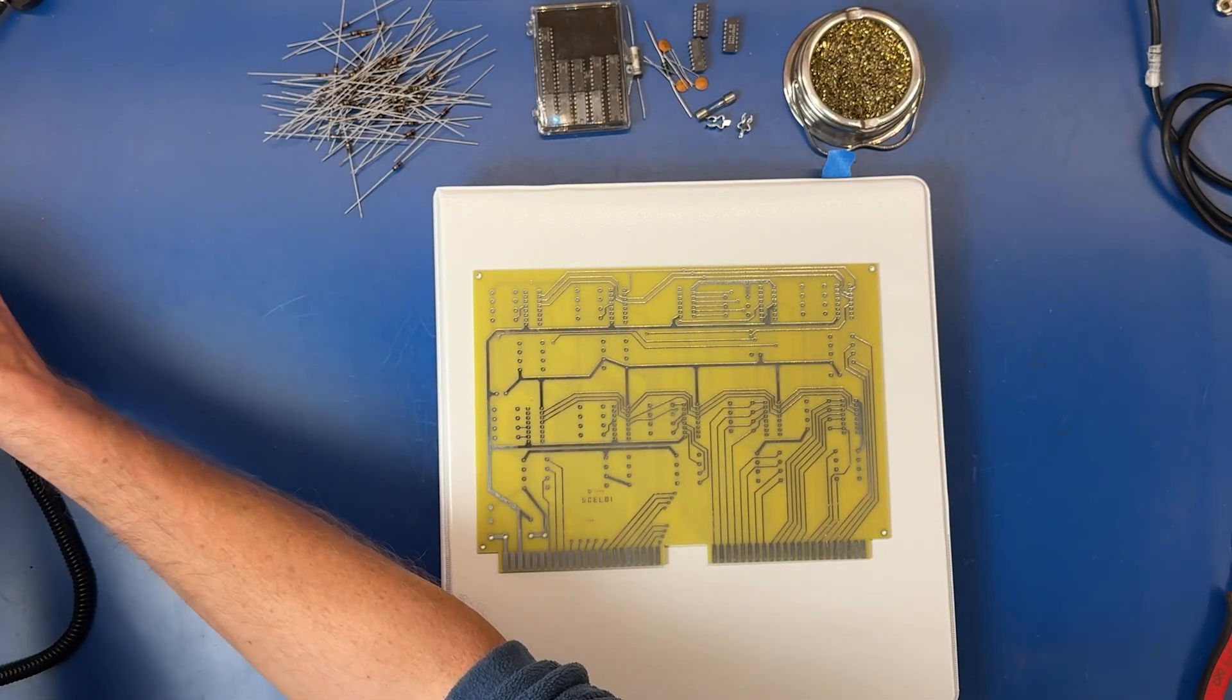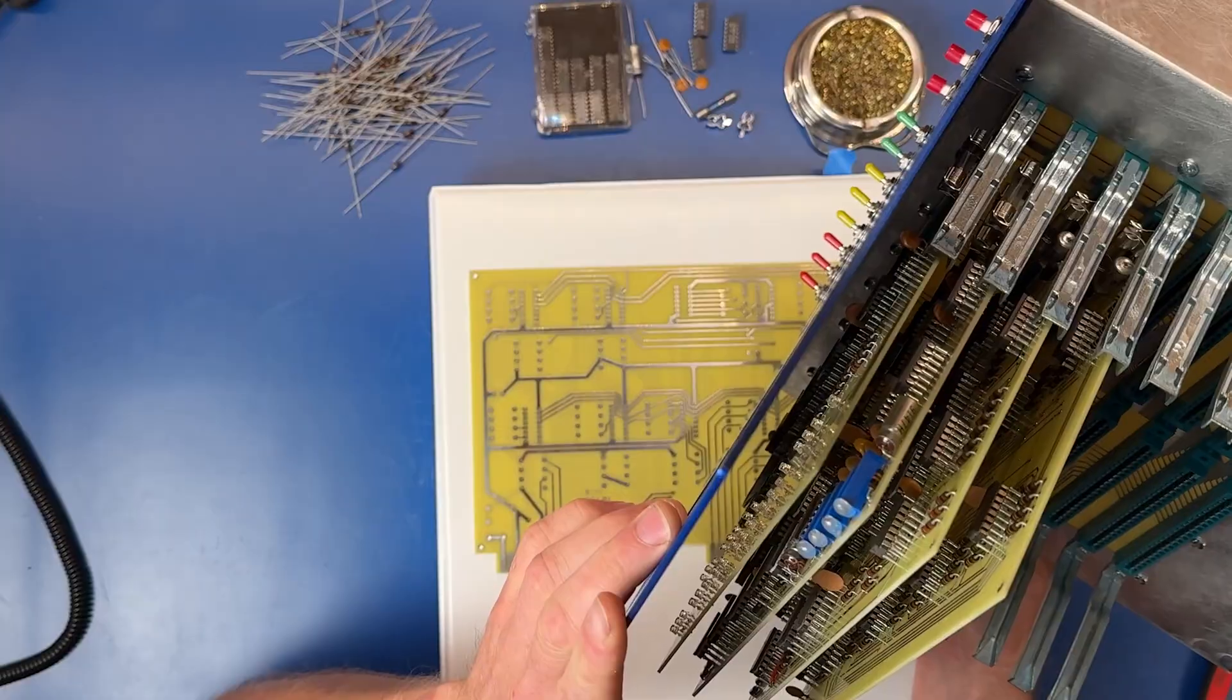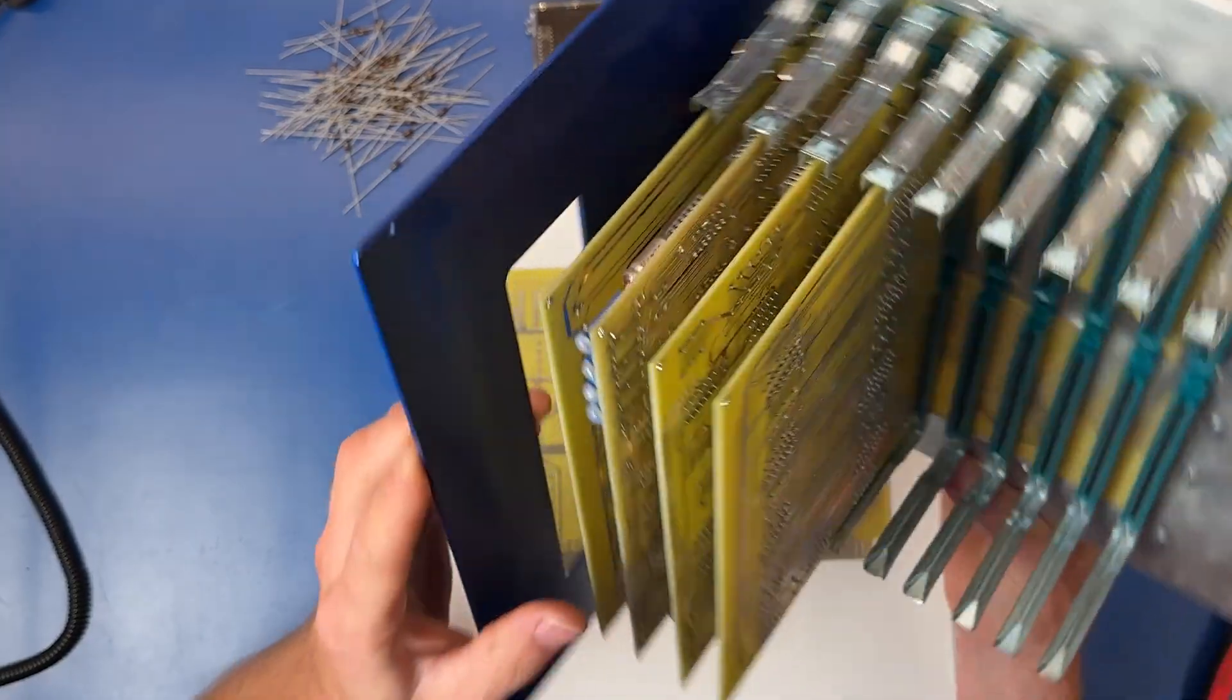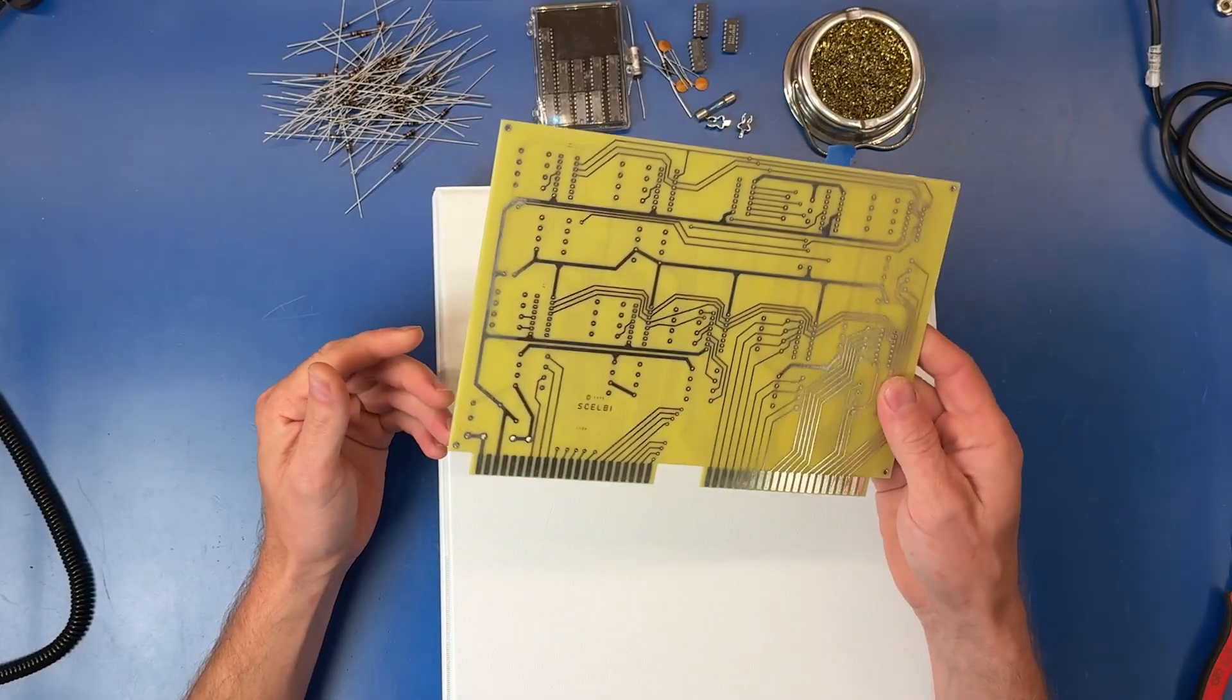Hey, welcome back. In the previous video of the CELB series, we completed this board right here, which is the input board. And that was the fourth board. In this video, we'll be assembling the memory expansion board.